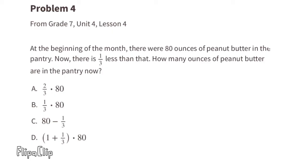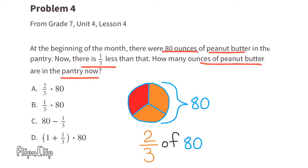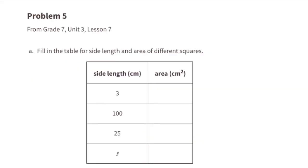Problem 4 — at the beginning of the month there were 80 ounces of peanut butter in the pantry. Now there is one third less than that. This represents 80 ounces divided into thirds — the red section is one third and the orange section is two thirds. Since there is one third less, two thirds of 80 ounces remain, so the answer is two thirds times 80.